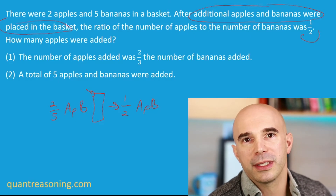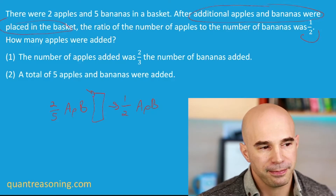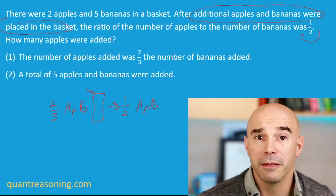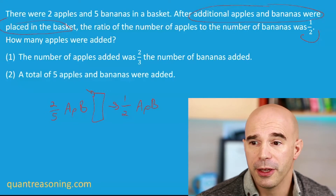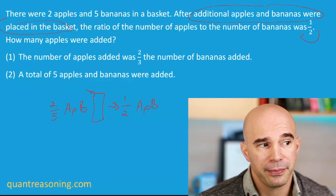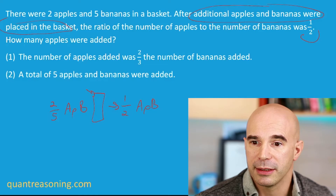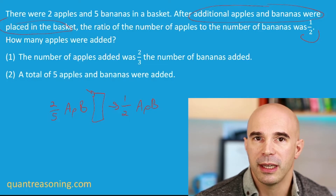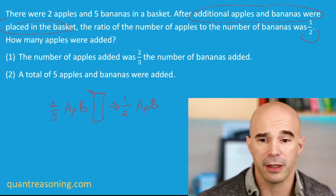Before we go to the statements, I have a very important question to ask all of you. Are you able to infer from the free info anything at all about the ratio of the additional apples to bananas — the additional apples to the additional bananas? What, if anything, can you say about that ratio just from the free info?